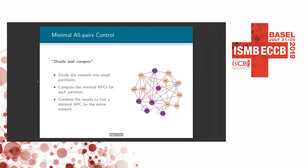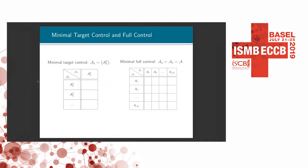To tackle this problem, we employed the divide-and-conquer strategy. Instead of treating the entire network at once, we divide it into small partitions, compute the minimal all-pairs control sets for each partition, then combine the results to find a minimal all-pairs control set for the entire network. Since target control and full control are special cases of all-pairs control, by changing the input settings — setting the target attractors as a single attractor or setting both source and target as the entire set of attractors — the algorithm computes the minimal solution for both target control and full control.